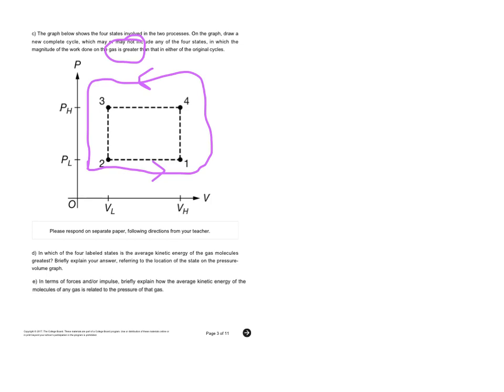All right, letter D, which of these has the greatest average kinetic energy? So essentially you want to figure out which of these is hotter, or which of these has the highest temperature. So recall you have your PV equals nRT equation. So to get the highest possible temperature, you want the combination of the highest pressure and the highest volume. So that would be over here, number four.